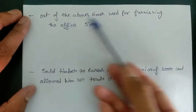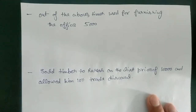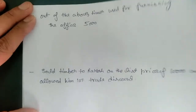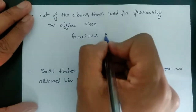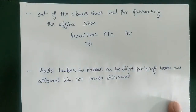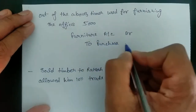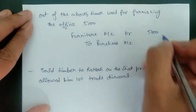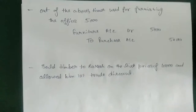Since nothing is mentioned about cash or bank payment, it is a credit transaction, so we use the name of the firm — Singh and Company. Next entry: out of the above timber, 5,000 worth was used for furnishing the office. The business made furniture from its own purchased goods. Entry: furniture account debit to purchase account 5,000 — we credit purchases because we are using our own stock, not buying anything new from outside.